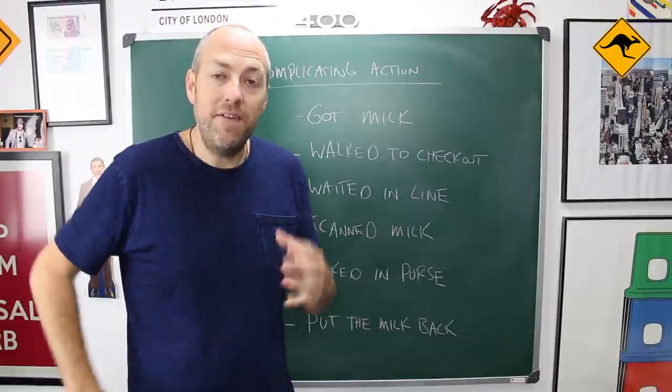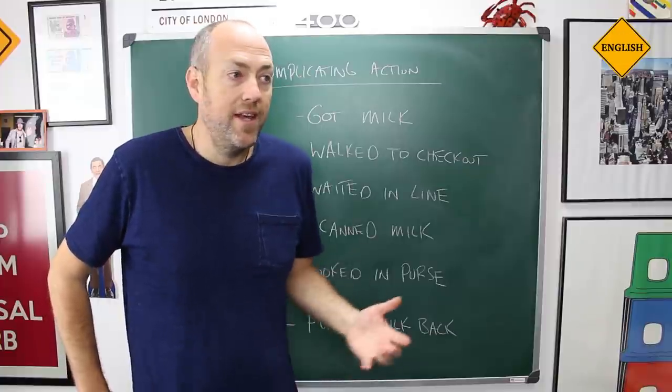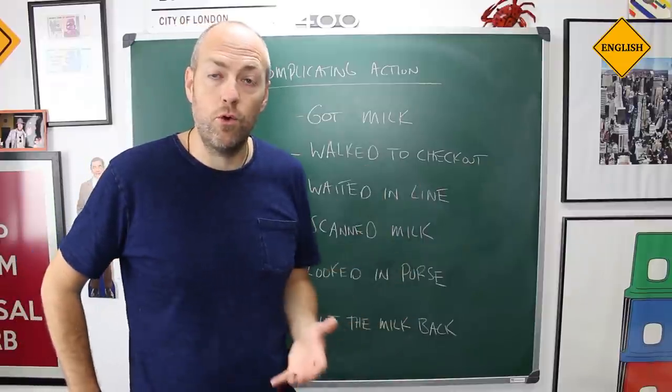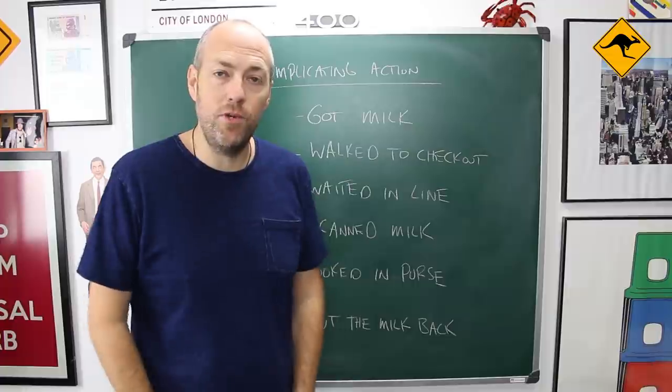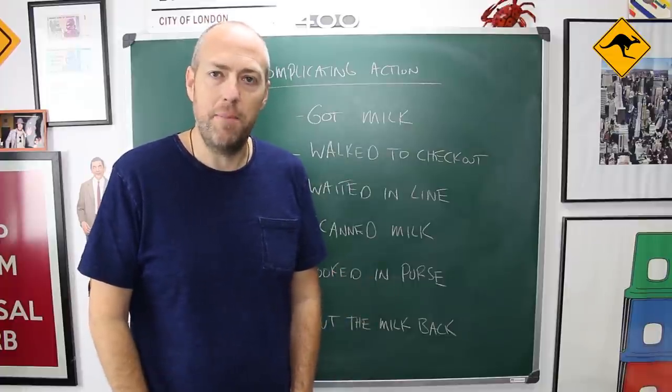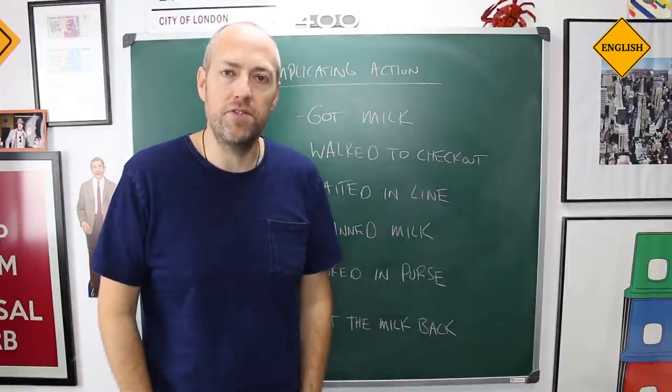But if you want, you can also use the historical present. It basically means that at some points in the story, you can use present simple or present continuous when you're talking about an event in the past. And the question is, why would you want to do that?